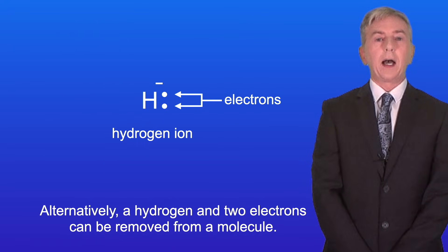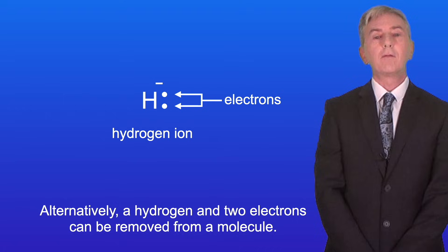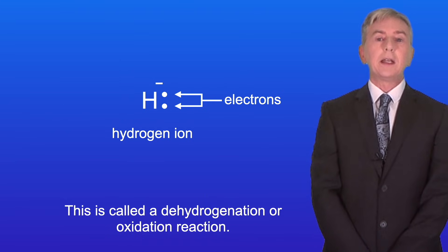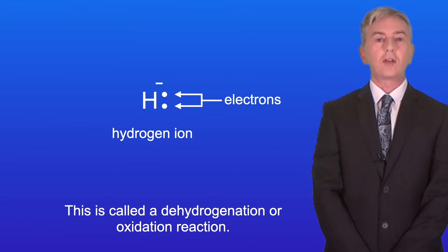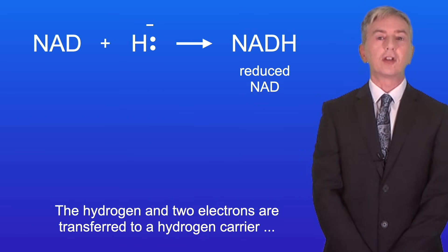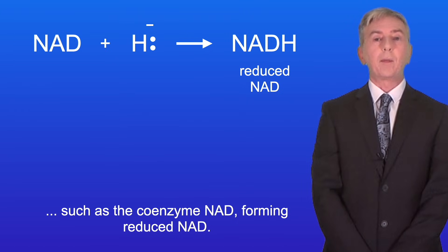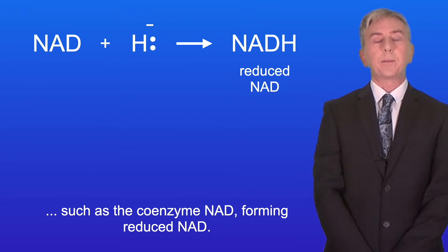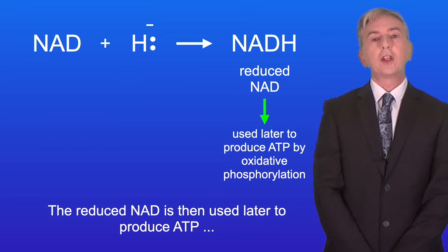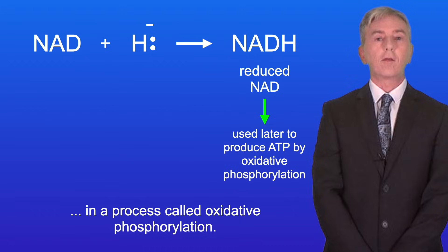Alternatively, a hydrogen and two electrons can be removed from a molecule. This is called a dehydrogenation or oxidation reaction. The hydrogen and two electrons are transferred to a hydrogen carrier, such as the coenzyme NAD, forming reduced NAD. The reduced NAD is then used later to produce ATP in a process called oxidative phosphorylation.